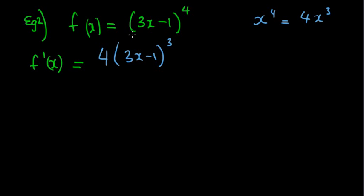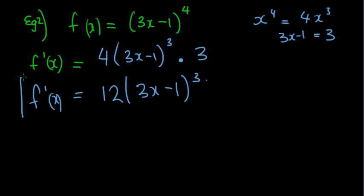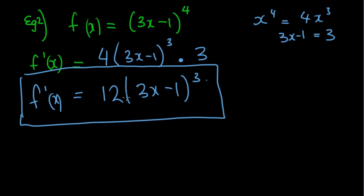Now the trick is, and this is where a lot of people go wrong, they often forget now to multiply it by the derivative of what's inside the brackets. So the derivative of 3x negative 1 would just be, well, the derivative of 3x is just 3, because that would make it to the power of 0, which is 1, and the derivative of negative 1 is nothing, so it's just 3. So now my answer is f'(x) is equal to 12 brackets 3x minus 1 cubed. And I don't have to expand it out. I can just leave it that way.